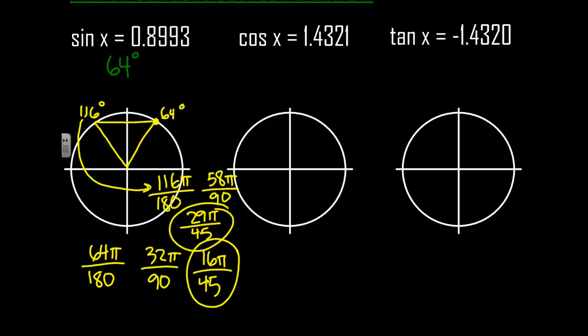The next one, cosine of what value is equal to 1.4321? I just said that the cosine and sine, the biggest values you can have is 1. So where the cosine would be 1.4 would be somewhere way out here. And that's not anywhere on our circle, is it? And that's because the cosine, a value of cosine of 1.4 is impossible.